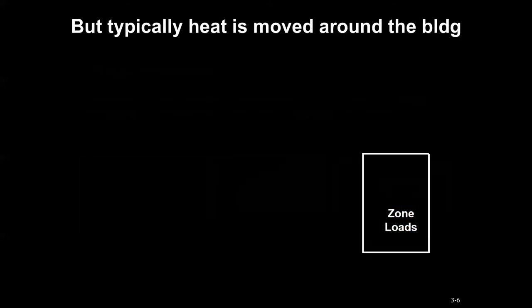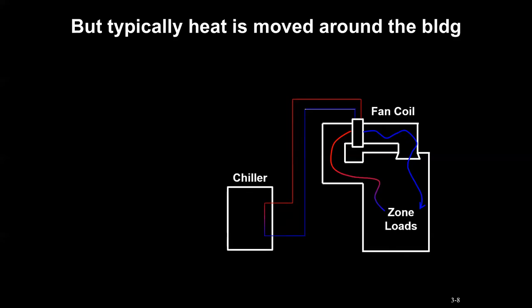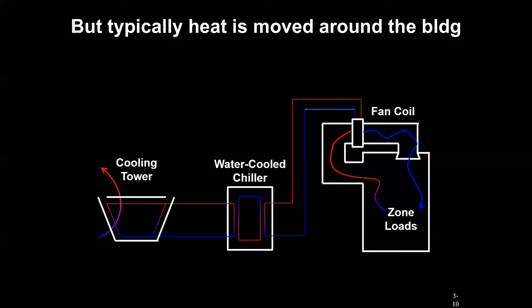Then we discussed how heat is essentially moved around the building to accomplish that process. We have loads that originate from a zone, we might have an air side system like an air handler or fan coil to capture those loads and kick them out to something like a chiller if it's a hydronic loop. If it's an air-cooled chiller, that would be released to the atmosphere acting as a heat sink. Or if it's a water-cooled chiller, we would add one more additional loop so that the cooling tower could accomplish that load rejection.